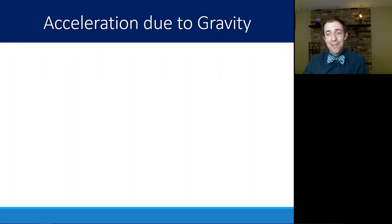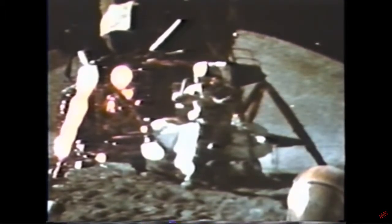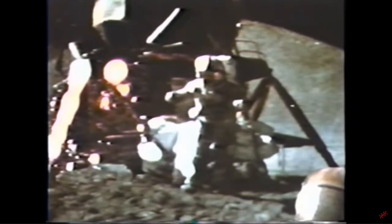Another really nice example of this is from one of the Apollo missions, where they drop a feather and a hammer at exactly the same time. In my left hand I have a feather, in my right hand a hammer. A gentleman named Galileo a long time ago made a rather significant discovery about falling objects in gravity fields, and we thought where better to confirm his findings than on the moon. The feather happens to be a falcon feather, and I'll drop the two of them here — and hopefully they'll hit the ground at the same time.